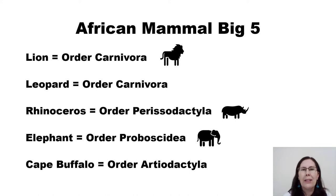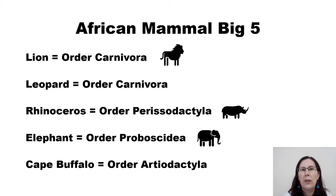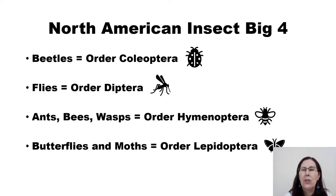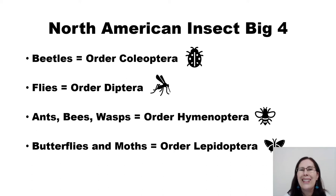If you had gone to Africa for a safari, you'd probably be looking for the big five. The big five for an African safari are all mammals. You'd be looking for a lion, leopard, rhinoceros, elephant, and cape buffalo. I've listed the orders these animals are in so that you can understand, when we're looking for the North American insect big four, that these are the same sort of classifications.